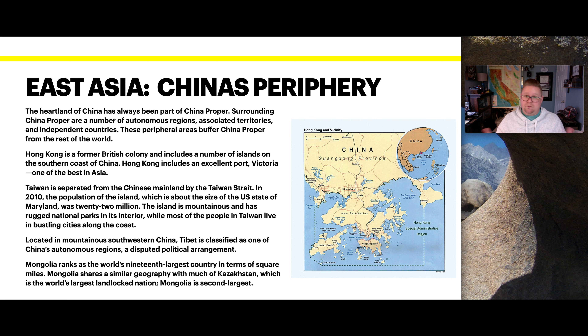The heart of China has always been part of China proper. Surrounding China proper are a number of autonomous regions, associated territories, and independent countries that buffer China proper from the rest of the world. Hong Kong is a former British colony that includes a number of islands on the south coast of China and an excellent port — Victoria — one of the best in Asia. Taiwan is separated from the Chinese mainland by the Taiwan Strait; in 2010 its population was about 22 million on an island roughly the size of Maryland. The island is mountainous with a rugged interior national park, while most people live in bustling coastal cities.